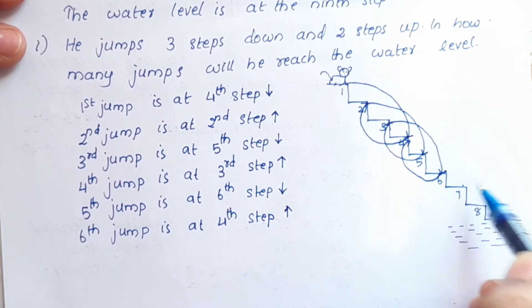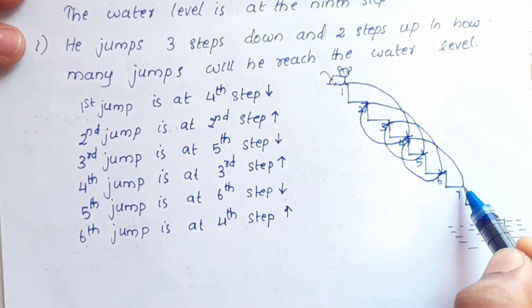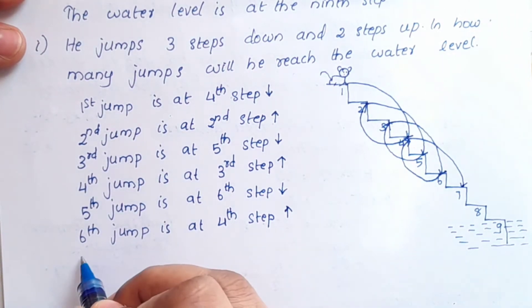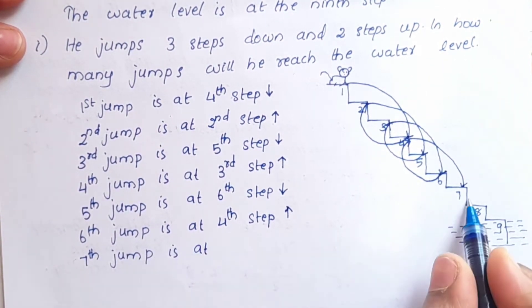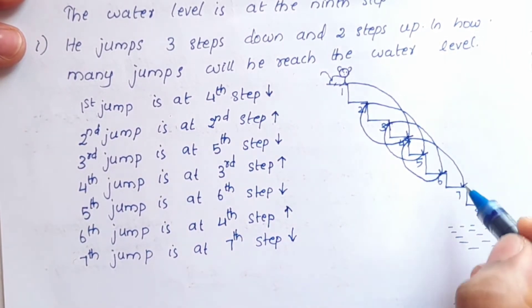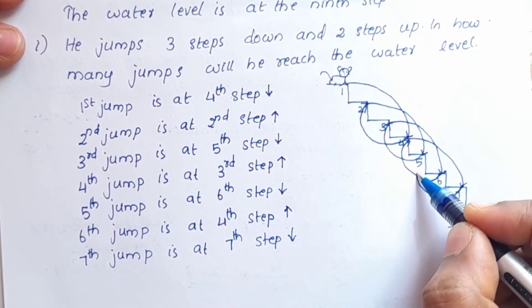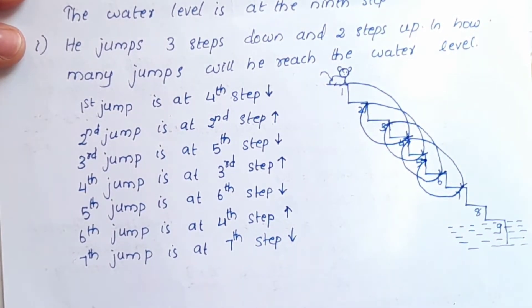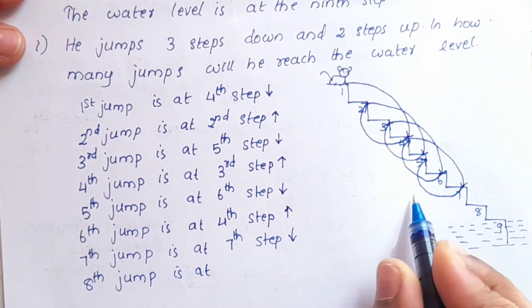From the 4th step, 3 steps down reaches the 7th step. Then 2 steps up brings the monkey back to the 5th step. The 8th jump goes 3 steps down to the 7th step again.